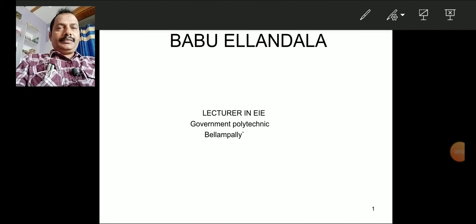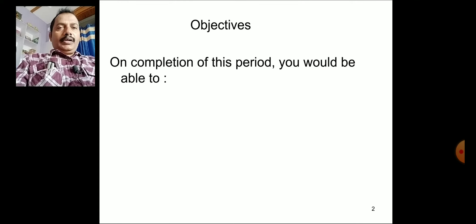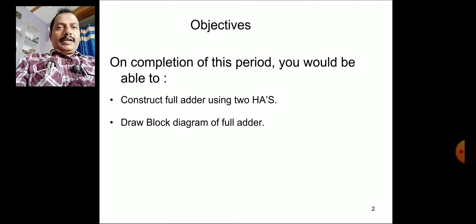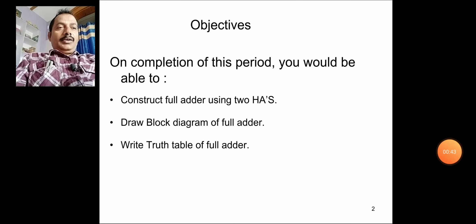Welcome to lectures on digital electronics. We are discussing combinational circuits. In the previous class we discussed the half adder, and now the objective of this lesson is the construction of a full adder using two half adders, the block diagram of a full adder, the truth table of a full adder, and the construction of a half adder using basic gates.